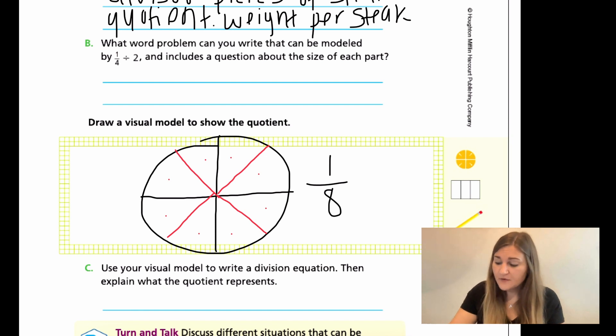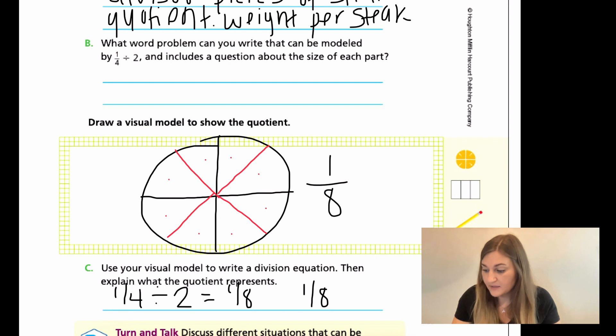So then for C, if I'm working through it, I know that I have my 1/4 and I divided it by 2, just like the problem they gave us in the word problem. I know that that equals 1/8. And then that 1/8 is in my problem, at least 1/8 of a pound of steak.